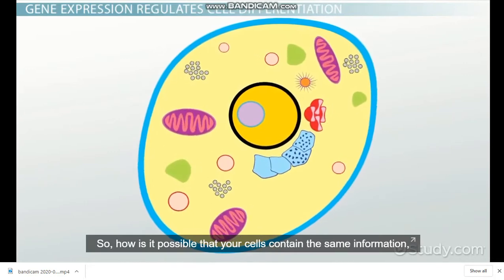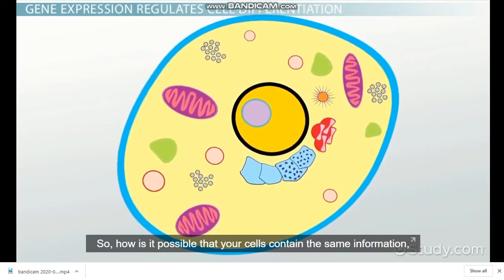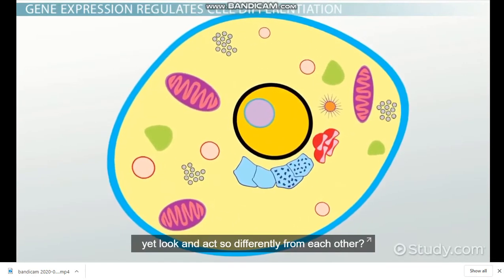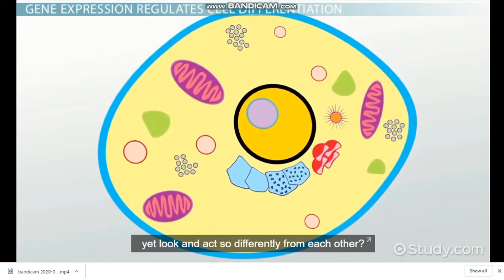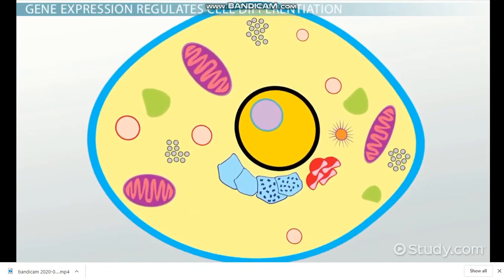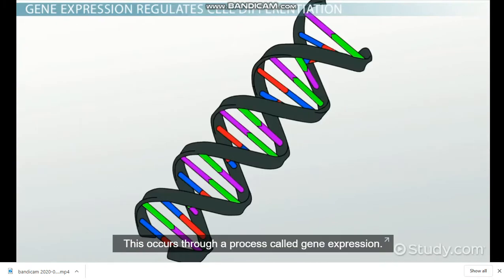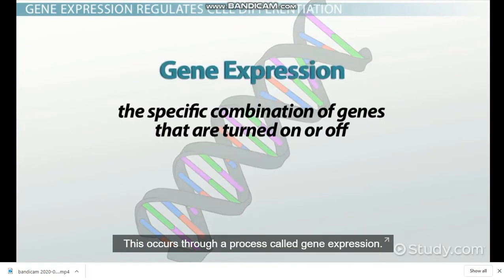So how is it possible that your cells contain the same information, yet look and act so differently from each other? Cell differentiation is how generic embryonic cells become specialized cells. This occurs through a process called gene expression.